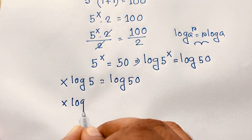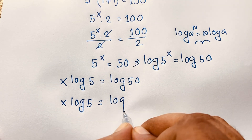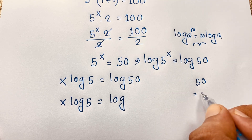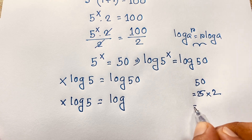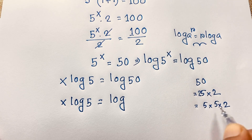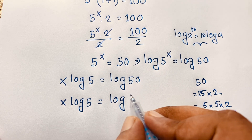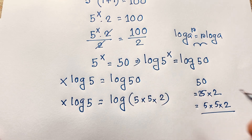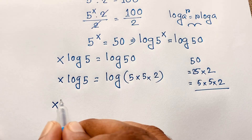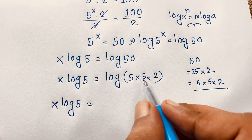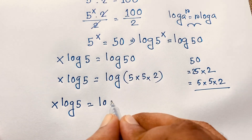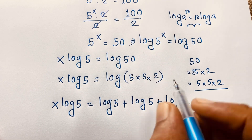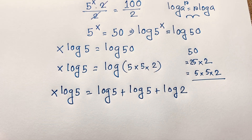Now, log 50 can be written as log of 25 times 2, which is log of 5 times 5 times 2. Applying the product rule — log(ab) equals log a plus log b — this becomes log 5 plus log 5 plus log 2, which is log 5² plus log 2.